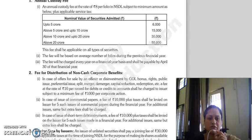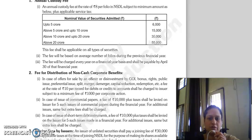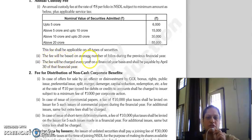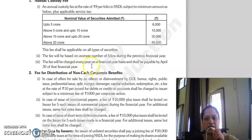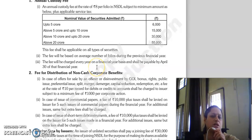Good morning everyone, continuing with our next lecture of the chapter of NSDL. The fee will be based on the average number of folios during the previous financial year. The fee will be charged every year on a financial year basis and will be paid by April 30th of that financial year.